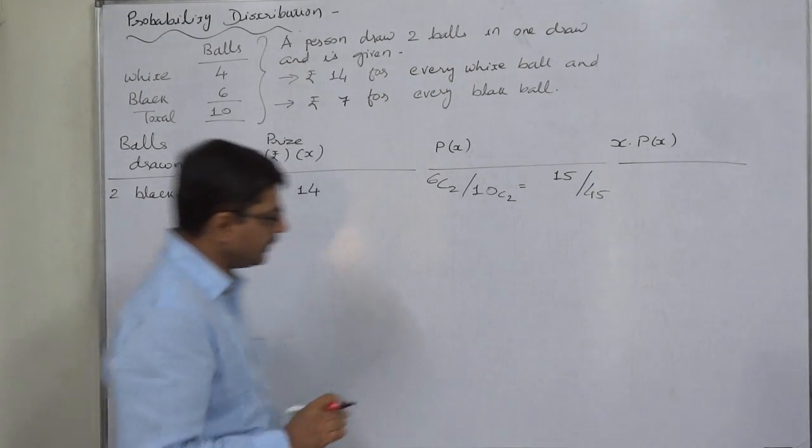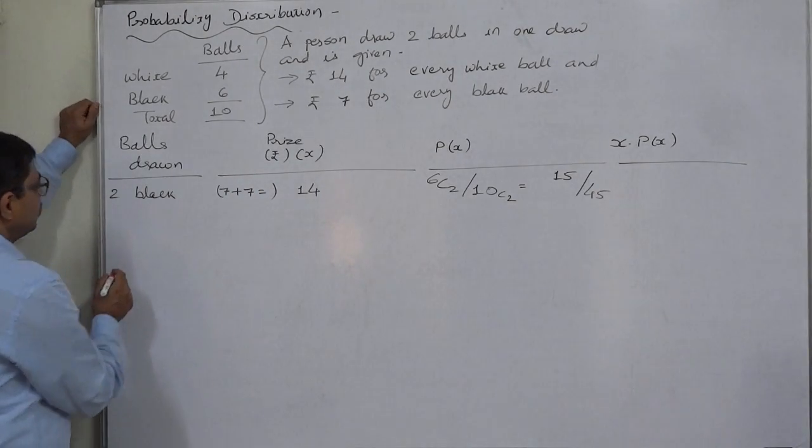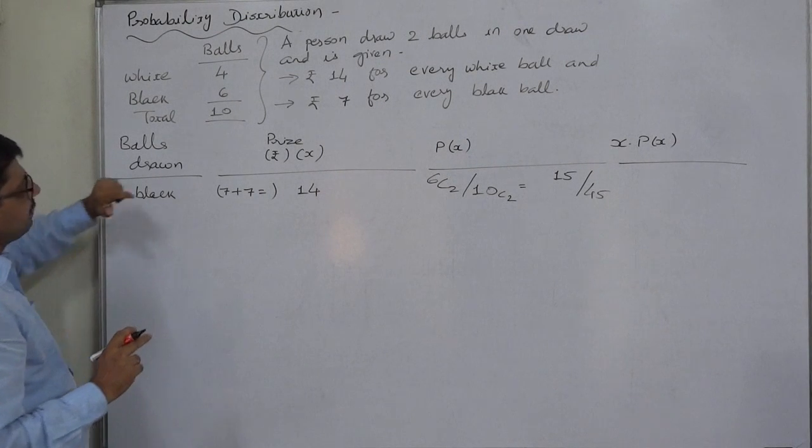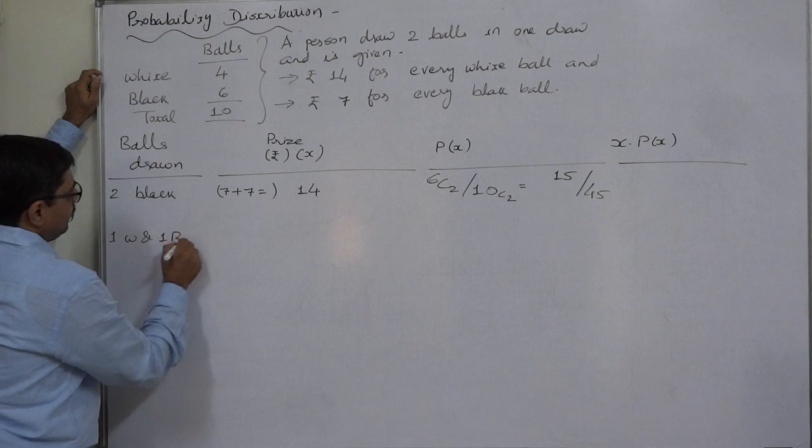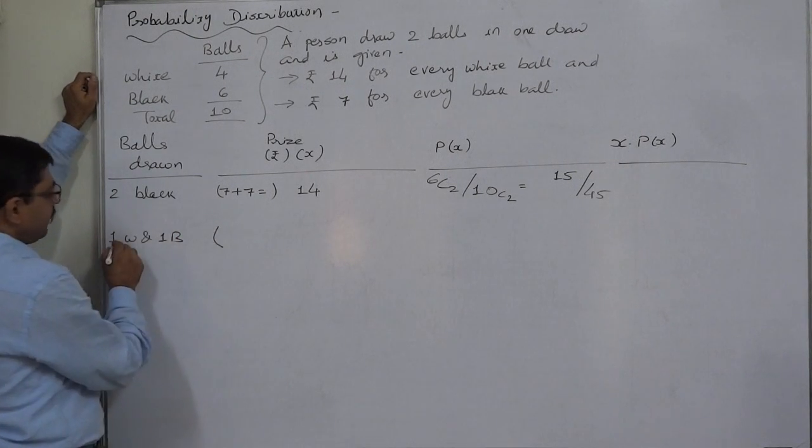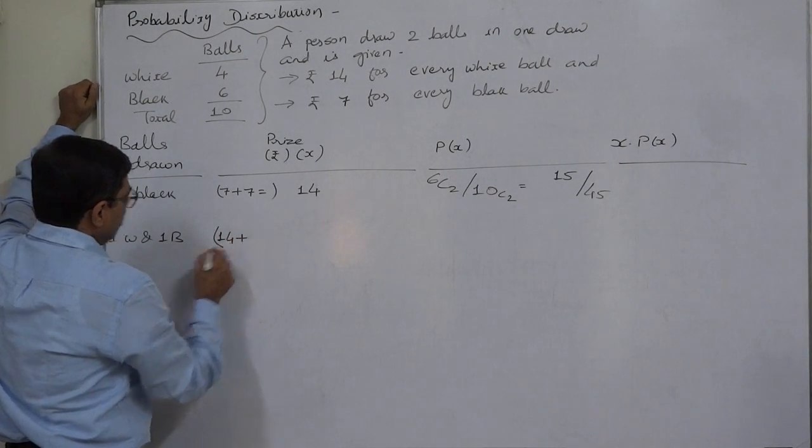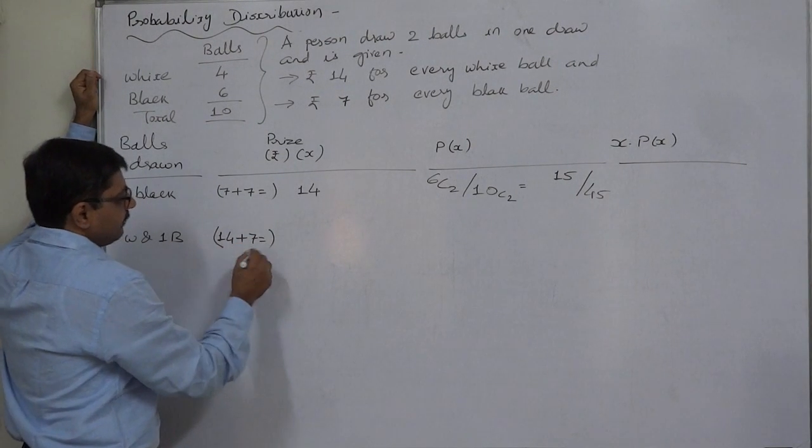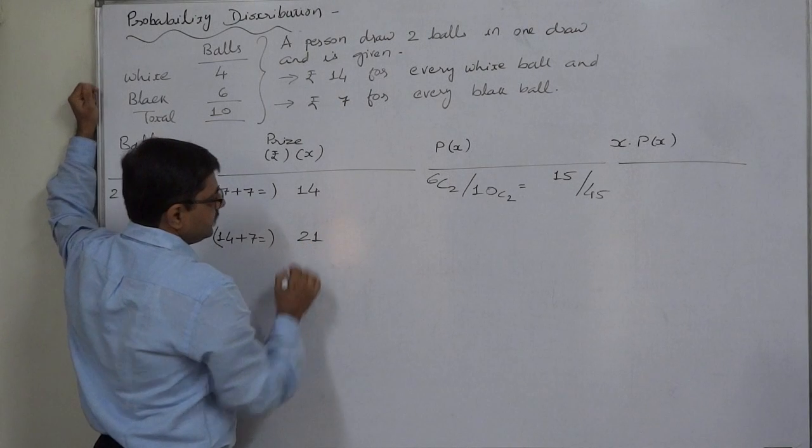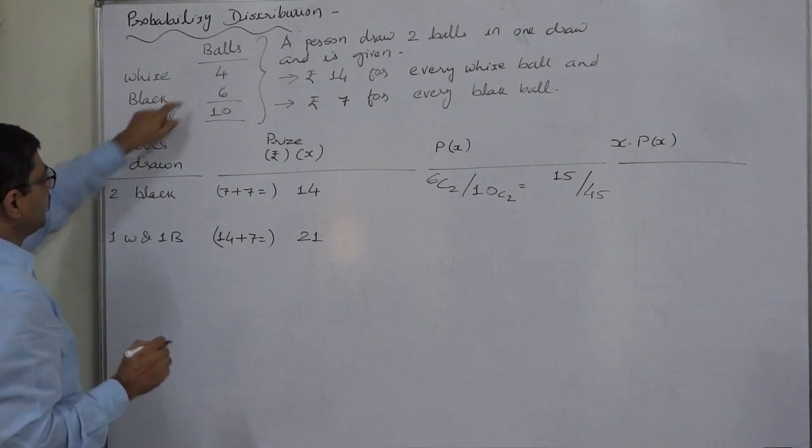I simplify the expected value itself at the last stage. Another possibility is 1 black and 1 white. That means on 1 white ball he will receive rupees 14 plus on 1 black ball he is going to receive rupees 7. So ultimately the price will be rupees 21. How can this happen?